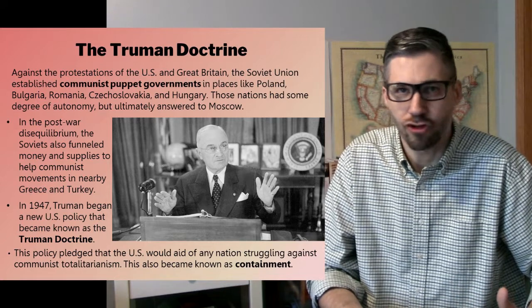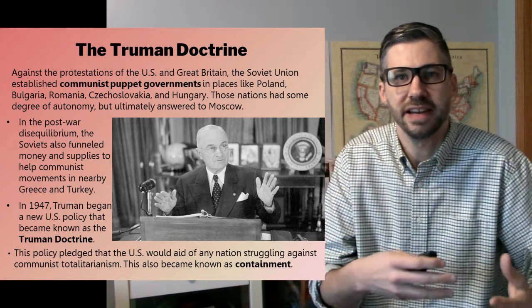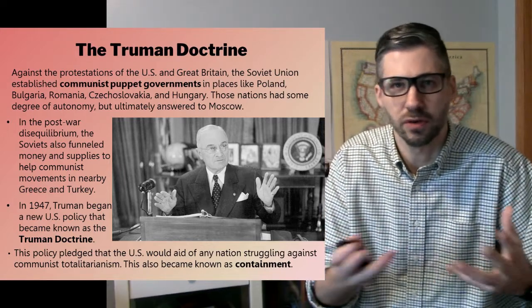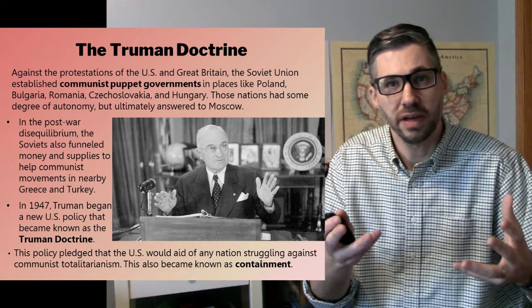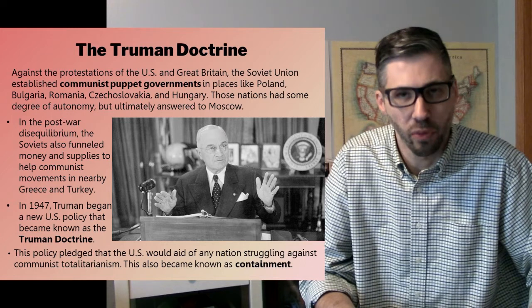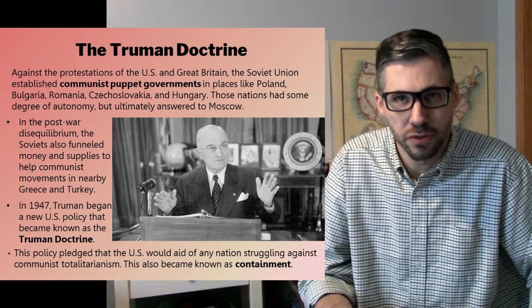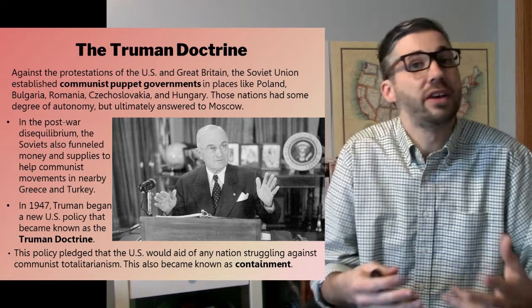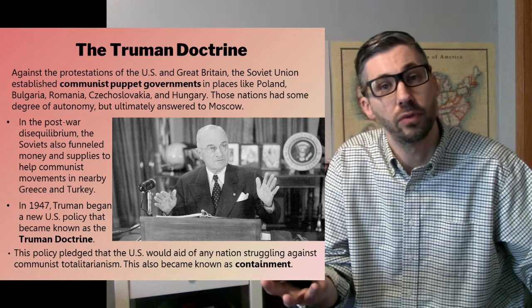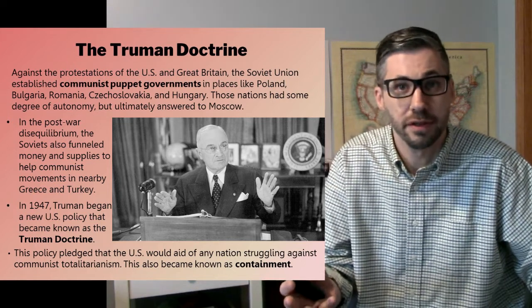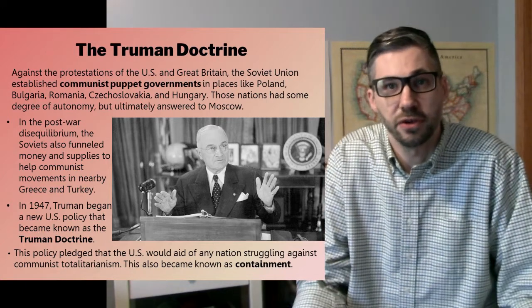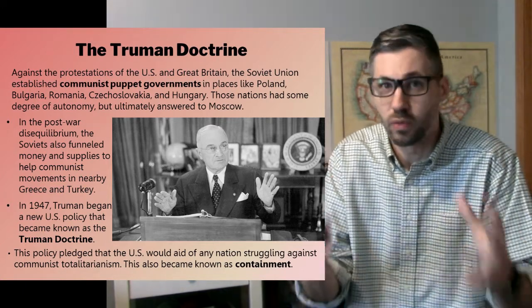The containment policy looks like this: if you are a nation — any nation — it doesn't matter the relationship the United States has had with you in the past, or whether you are a critical economic partner, if you are a nation struggling to resist communist revolution, the United States will stand to support you. We are the place you can turn to for help. And you might ask, why couldn't someone else do that? In the wake of World War II, who else can do this? There is nobody else in that position. The United States says: we'll help. Are you trying to resist totalitarianism? Then we will help.